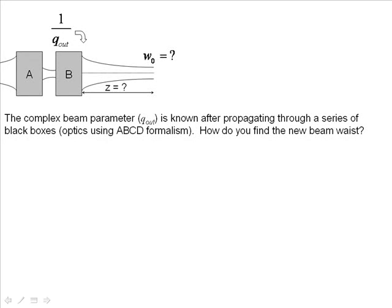That's our next challenge here. Let's say we have two optical systems. We get our 1 over q out from the output of our second optical system, and we want to know what z and w naught are. How do we go about doing that?